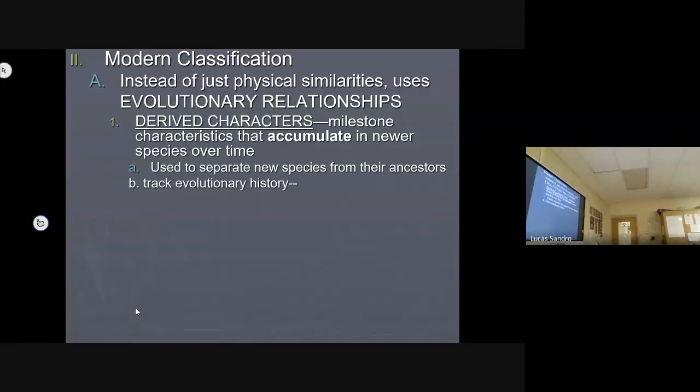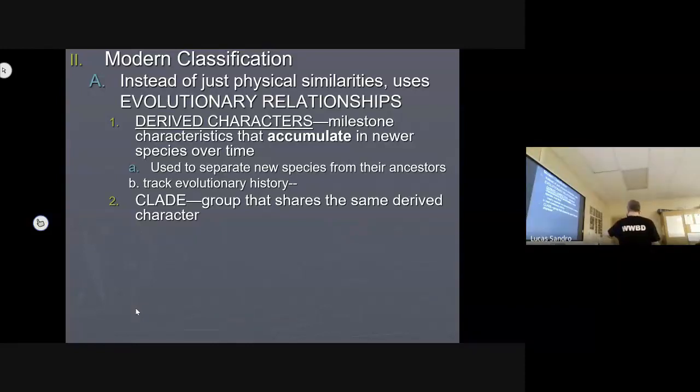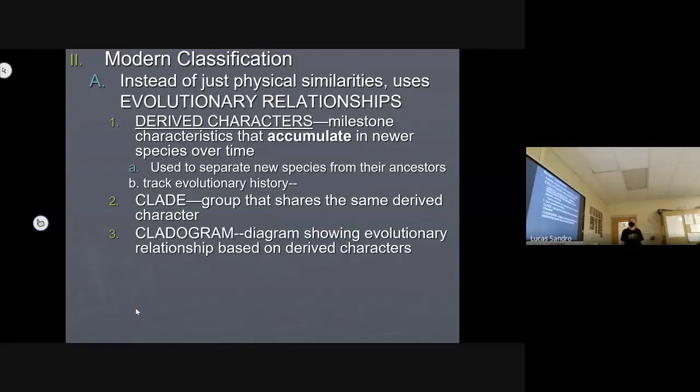When you find one, when you pick a derived character, and everything after it has that derived character, that group, that branch of the evolutionary tree, we call that a clade. So a few new terms here: derived characters, clades, and taking a set of derived characters and using them to diagram out a whole family tree of living things, we call that a cladogram. That's what you're going to learn to do today.